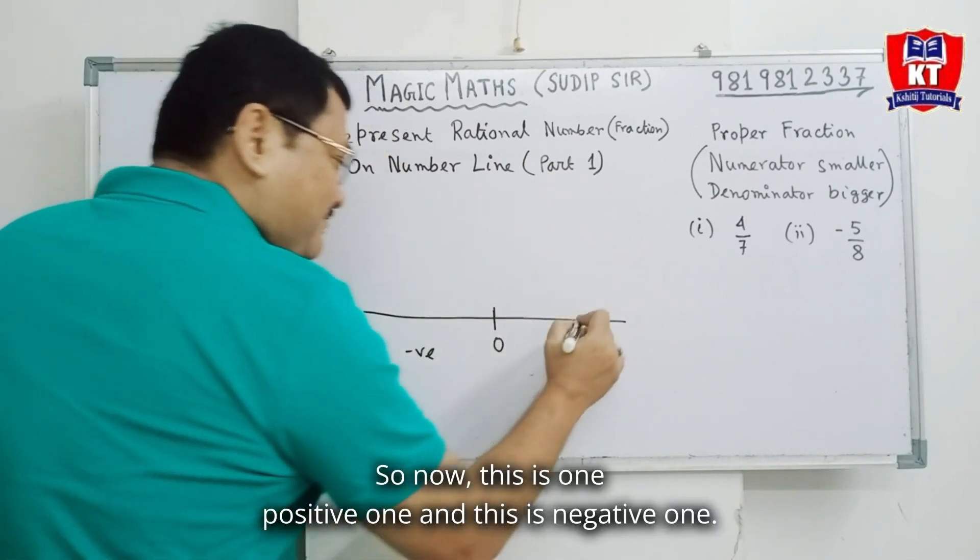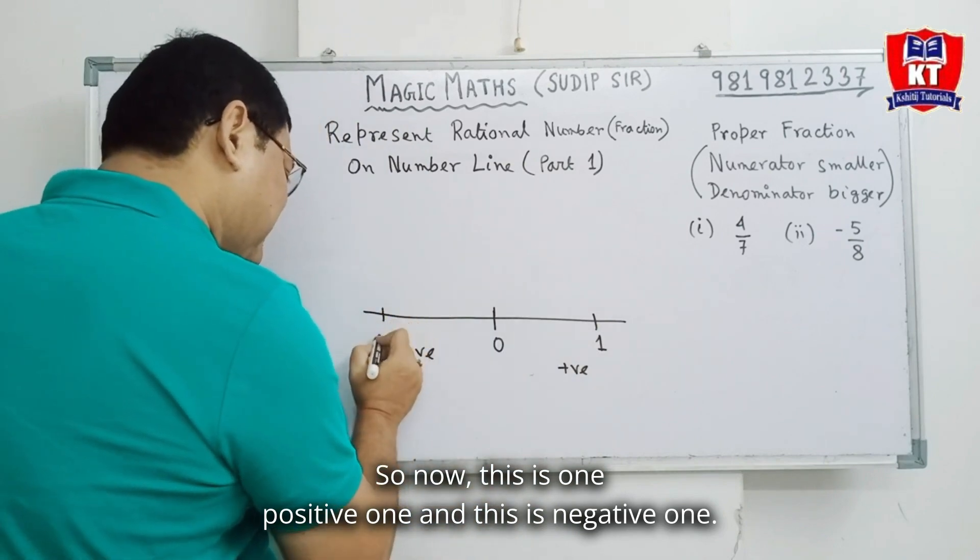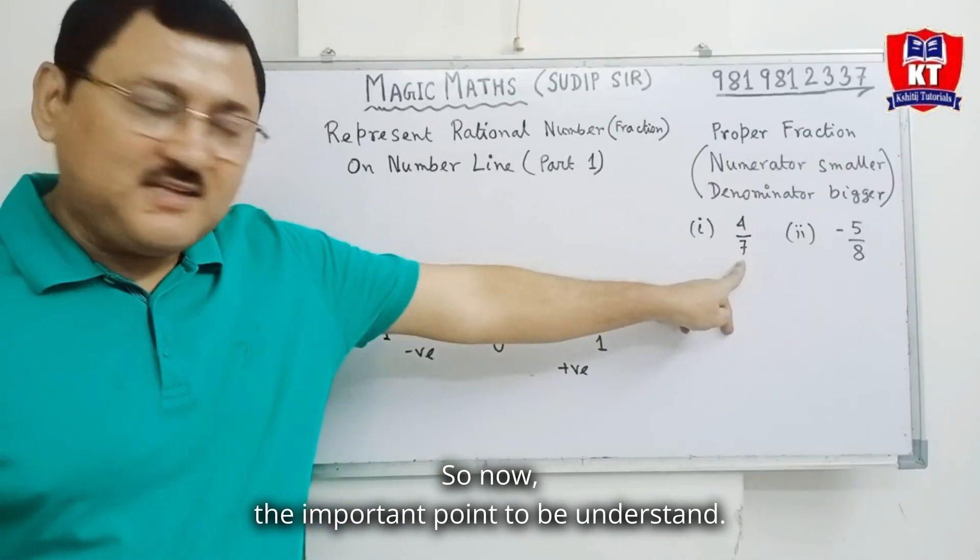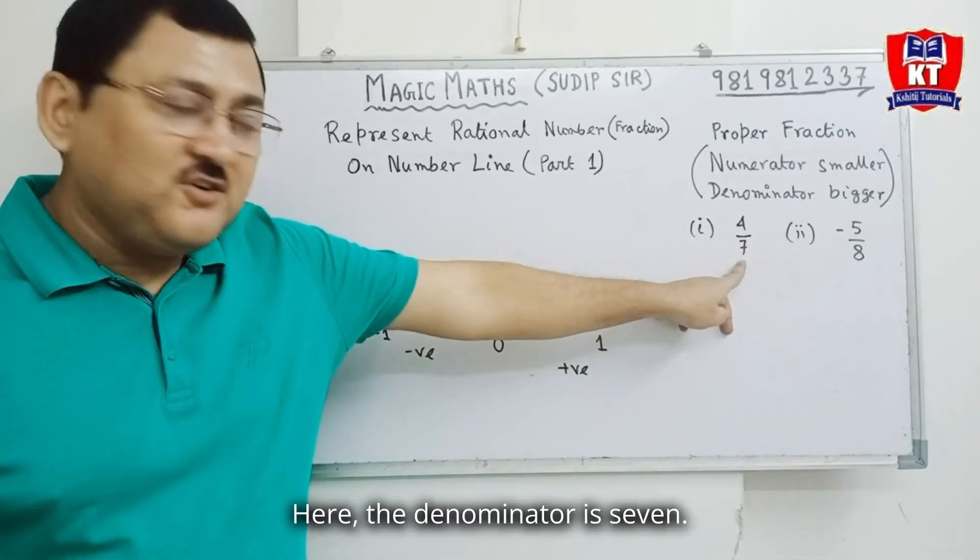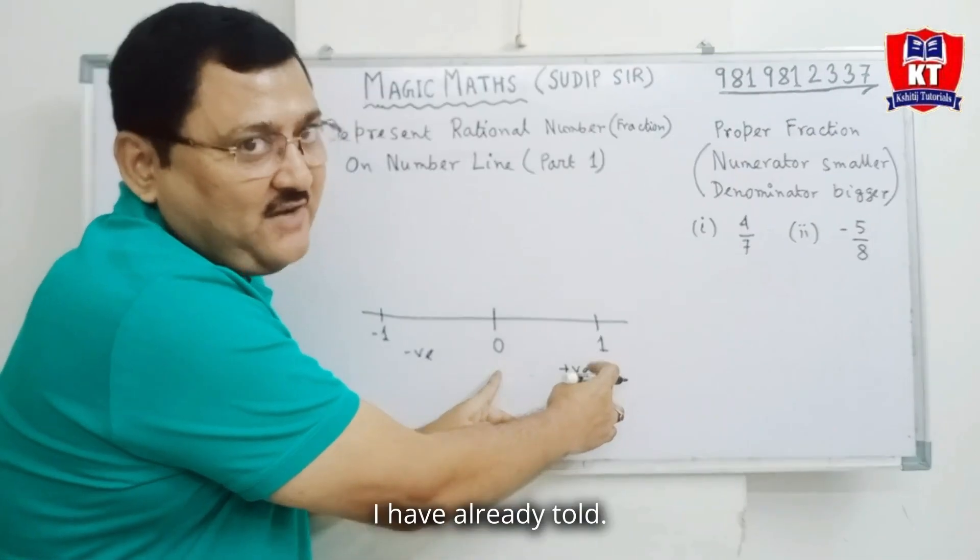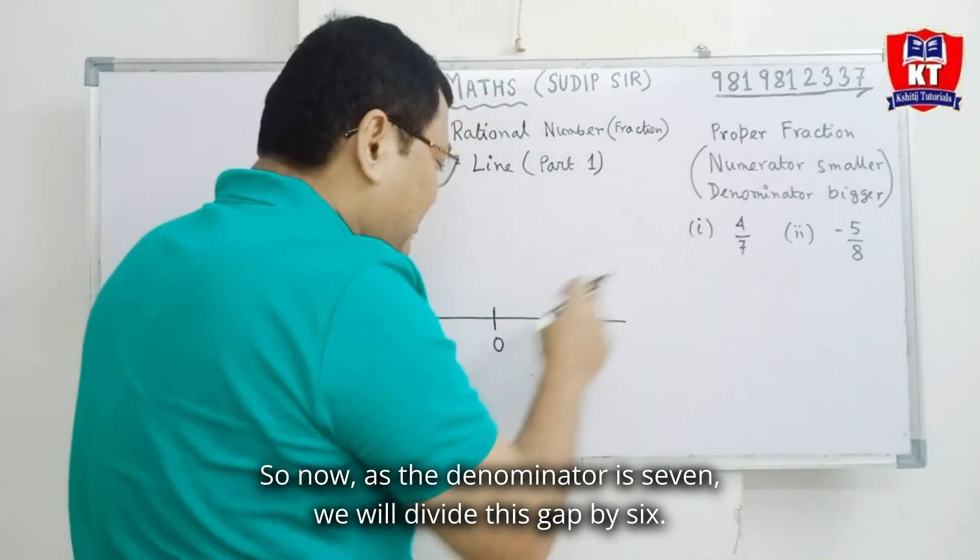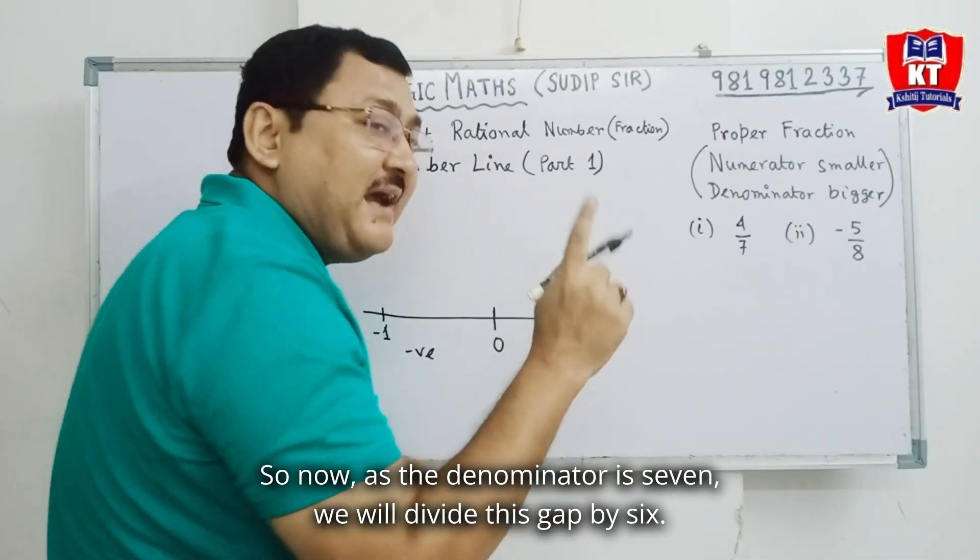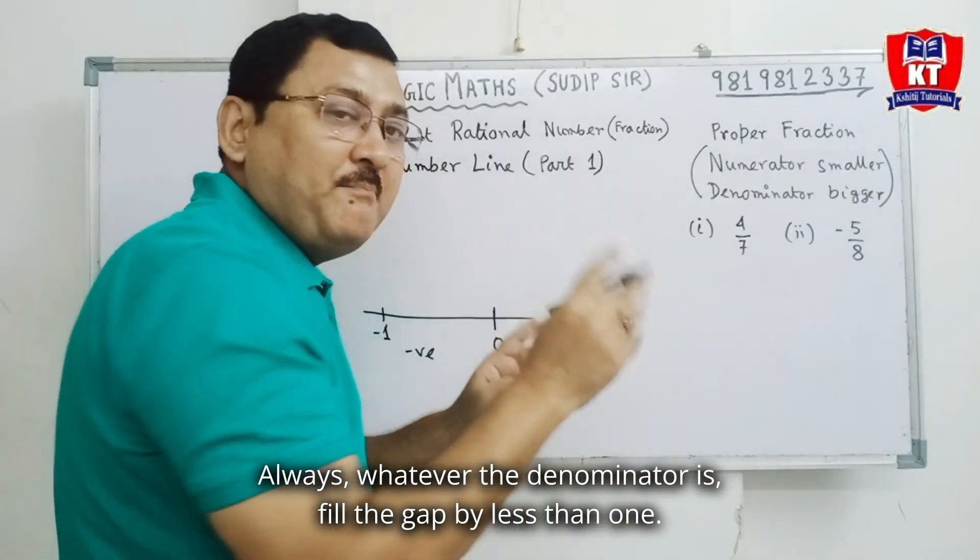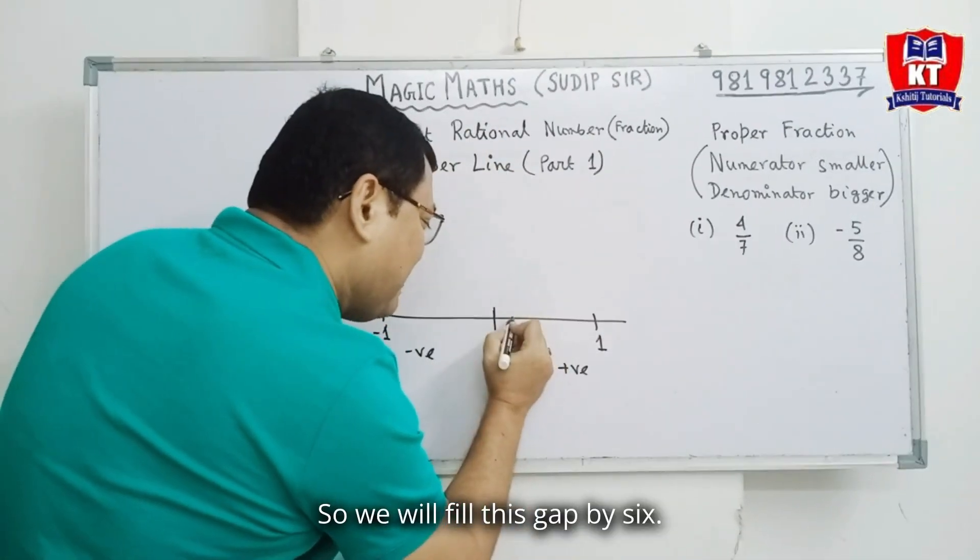So, now, this is 1 positive 1 and this is negative 1. So, now, the important point to be understand. Here, the denominator is 7. So, this number will lie between 0 and 1. I have already told. So, now, as the denominator is 7, we will divide this gap by 6. Always, whatever the denominator is, fill the gap by less than 1. So, here denominator is 7, so we will fill this gap by 6.